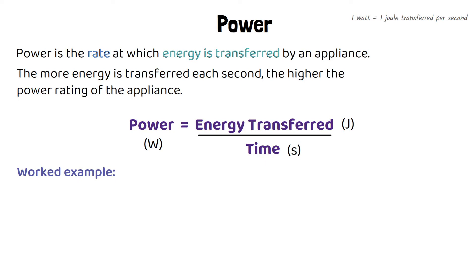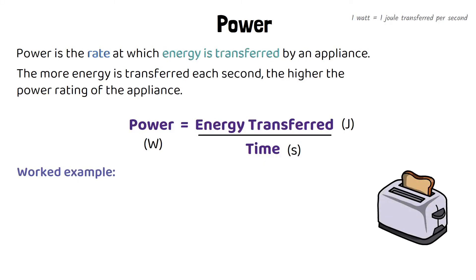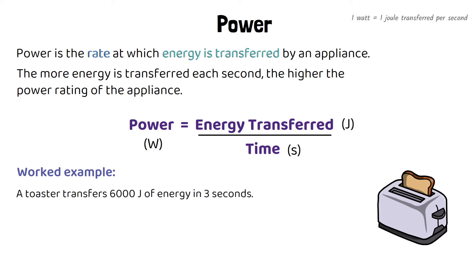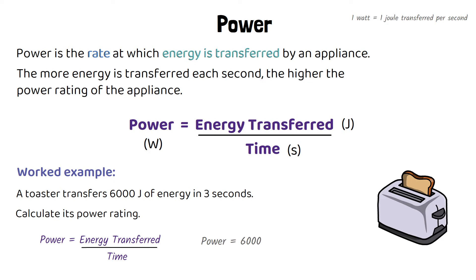Here's an example of how to use that equation. We have a device, for example, a toaster. A toaster transfers 6,000 joules of energy in three seconds. Calculate its power rating. So we're going to need that equation: power equals energy transferred divided by time. We substitute the values given: energy transferred is 6,000 joules and the time is three seconds. 6,000 divided by three gives us a power rating of 2,000 watts.